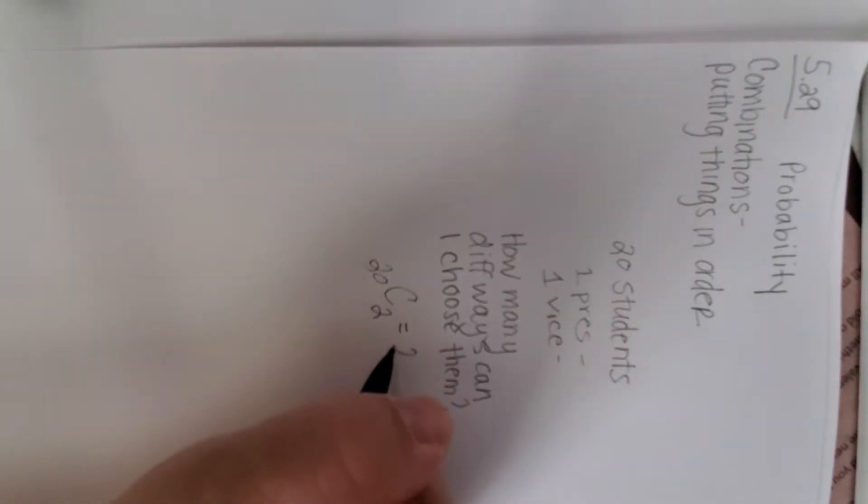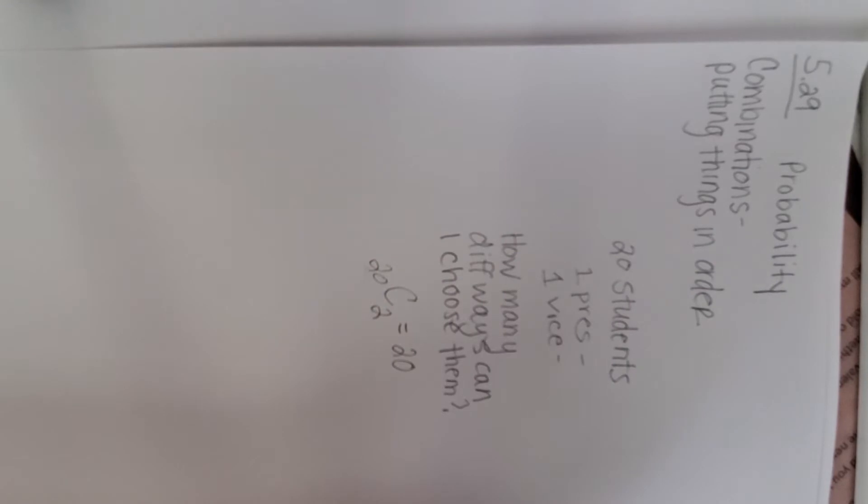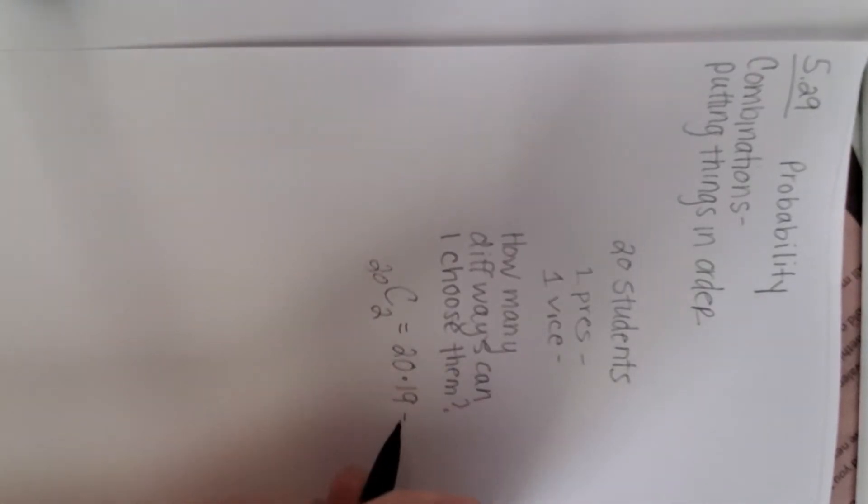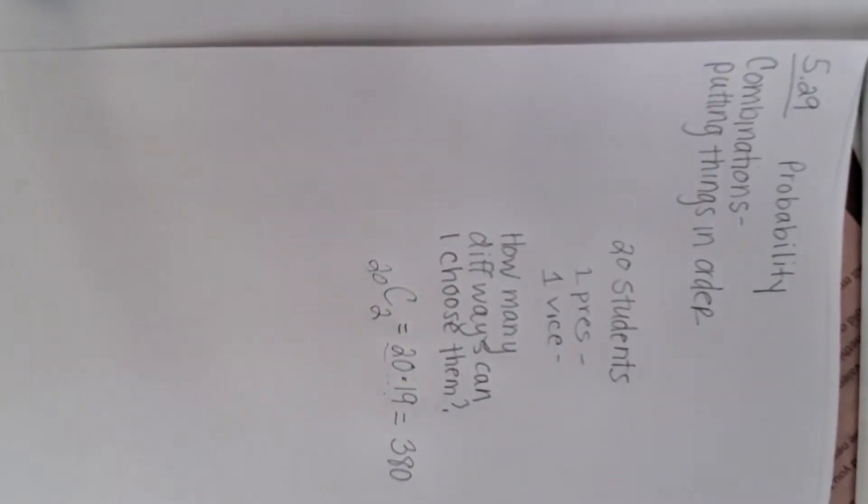Well, how many choices do I have when I pick the president? I have 20 choices of students, correct? And then I pull that one student, so now when I pick my vice president, I only have a choice of 19 different students. So if we actually multiply our choices together, 20 times 19, which would be 380, I believe.